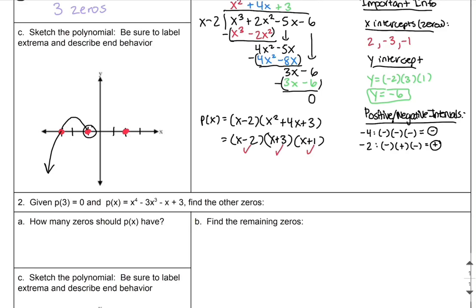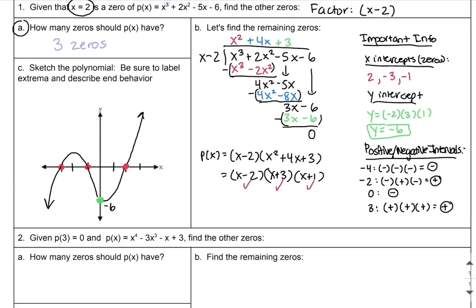I pick 0 to test between x=-1 and x=2. I already found the y-intercept is negative 6, so the graph is below the line there — confirmed by passing through (0, negative 6). Then I pick 3 to the right of the rightmost x-intercept: plugging into the factored form gives positive times positive times positive, a positive answer, so the graph goes upward to the right, matching the end behavior for x cubed. That completes the graph, with a relative maximum between x=-3 and x=-1, and a relative minimum between x=-1 and x=2.